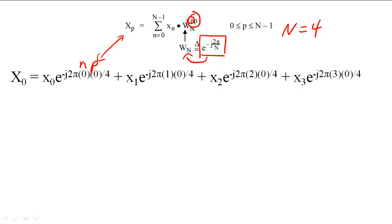When the DFT sample index is zero, the DFT sample is simply equal to the summation of all four time samples. This result should not be surprising, since the first DFT sample corresponds to the DC component of the signal.